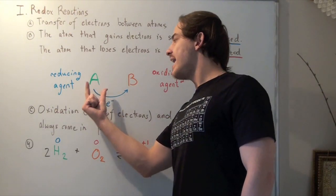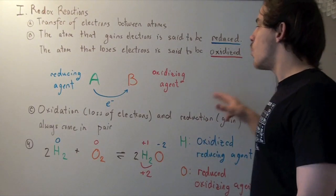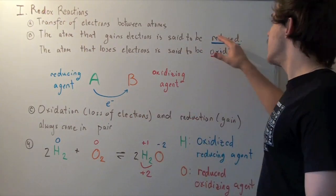So species A, or atom A, is said to be oxidized, while atom B is said to be reduced.